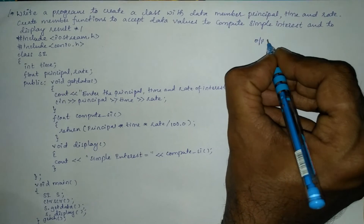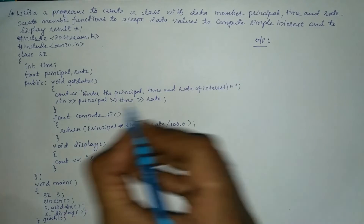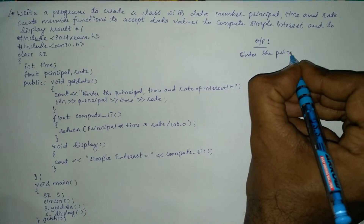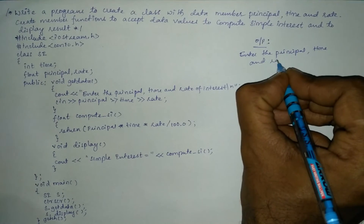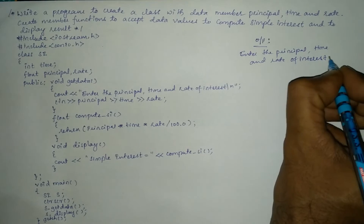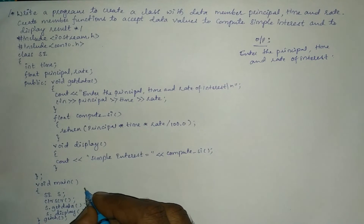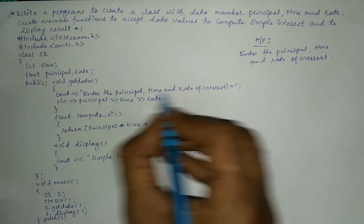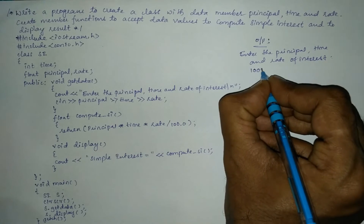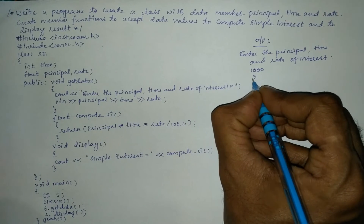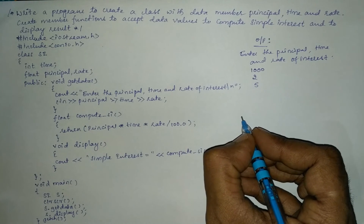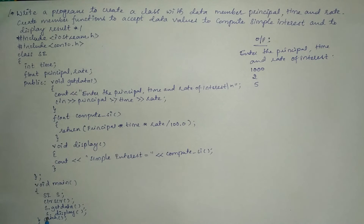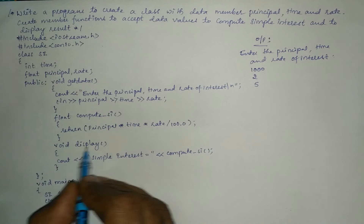Now let us check how exactly this program works. Once we compile and run it, it will ask the user to enter the principal, time, and rate of interest. Execution of a C++ program always starts from the main function. Once we call get_data, control directly jumps to get_data and it asks the user to enter the three values. Using cin, I enter for example 1000 as the principal amount, 2 years as the time duration, and 5 as the rate of interest.